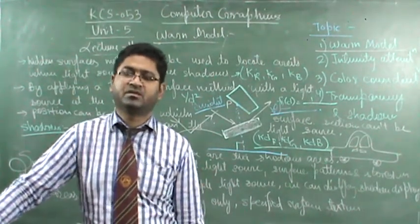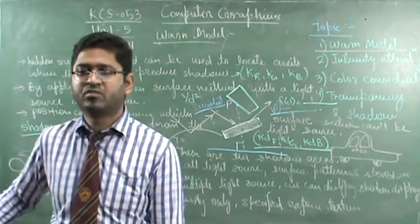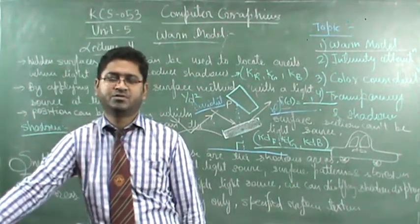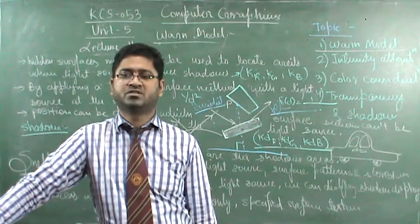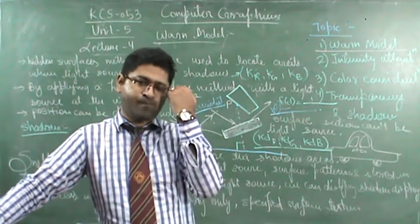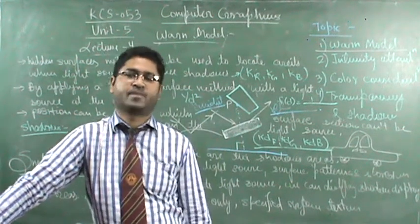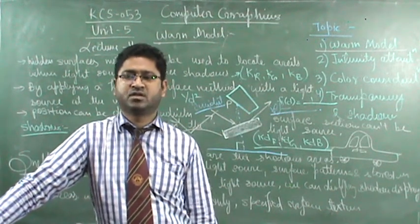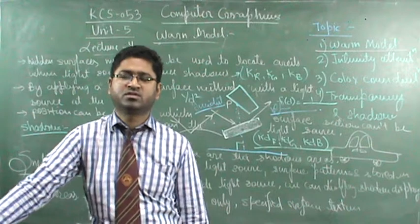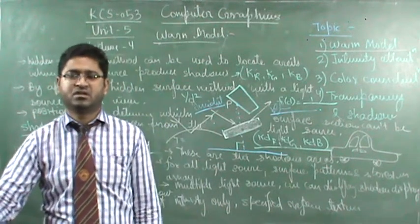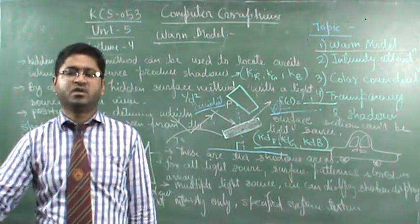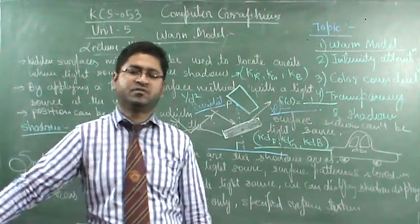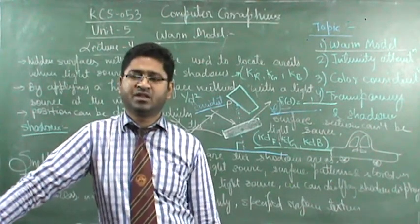A simpler procedure for modeling transparent objects is to ignore the path shifts altogether. In effect, this approach assumes there is no change in the index of refraction from one material to another, so the angle of refraction is always the same as the angle of incidence.